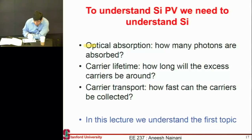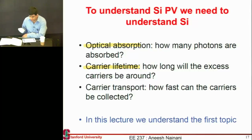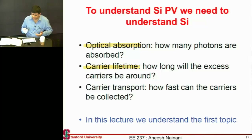One is that it needs to absorb all the light — all the photons which are above the band gap. The other thing needed is a good lifetime, or low recombination, associated with these carriers. When they're generated, if they recombine immediately, then it wouldn't be a good solar cell. So you want to maximize your carrier lifetime.